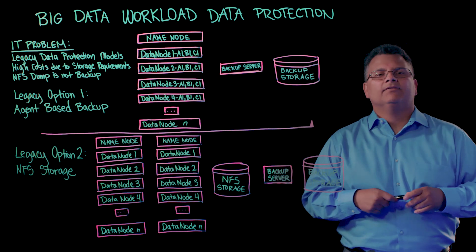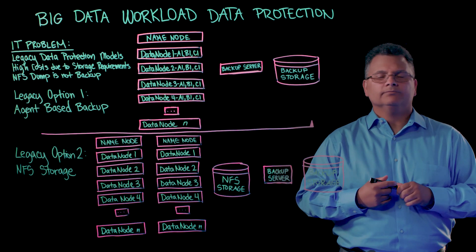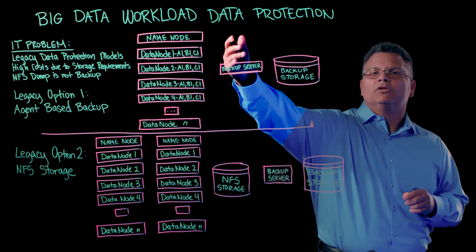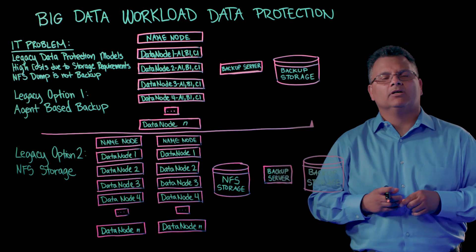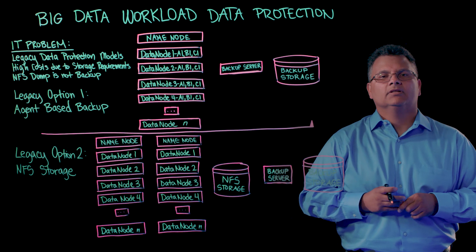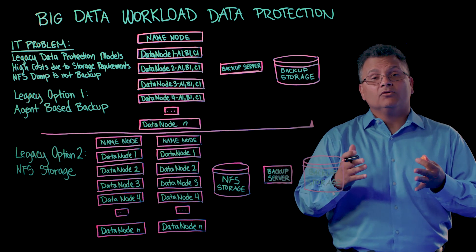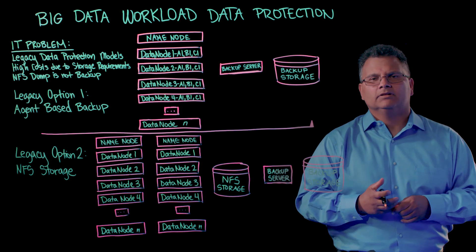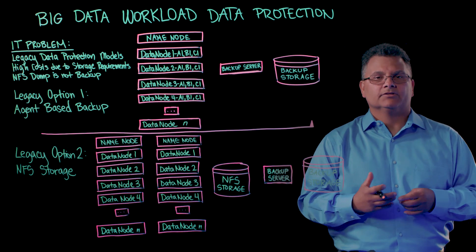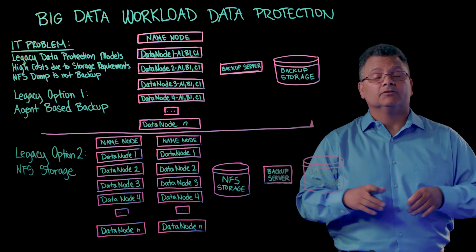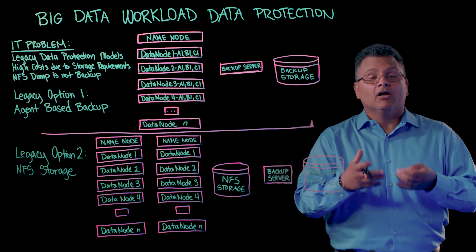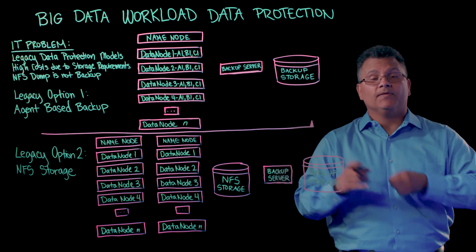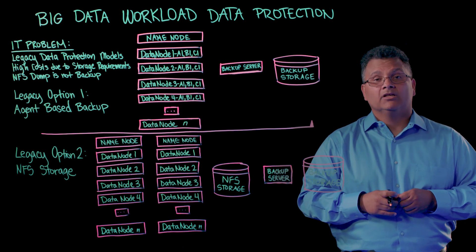In this diagram, we have a Hadoop cluster. As you can see, we have a name node and multiple data nodes. The name node is primarily a traffic cop — it's where metadata is. There is no data, no information on that name node that needs to be protected. The information is on the data nodes.